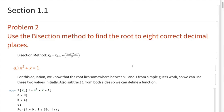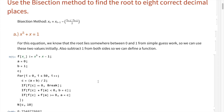Problem two: use the bisection method to find the root to eight correct decimal places. To begin for this problem, I want to explicitly state what the bisection method is so that we can hang on to this evaluation for future use.